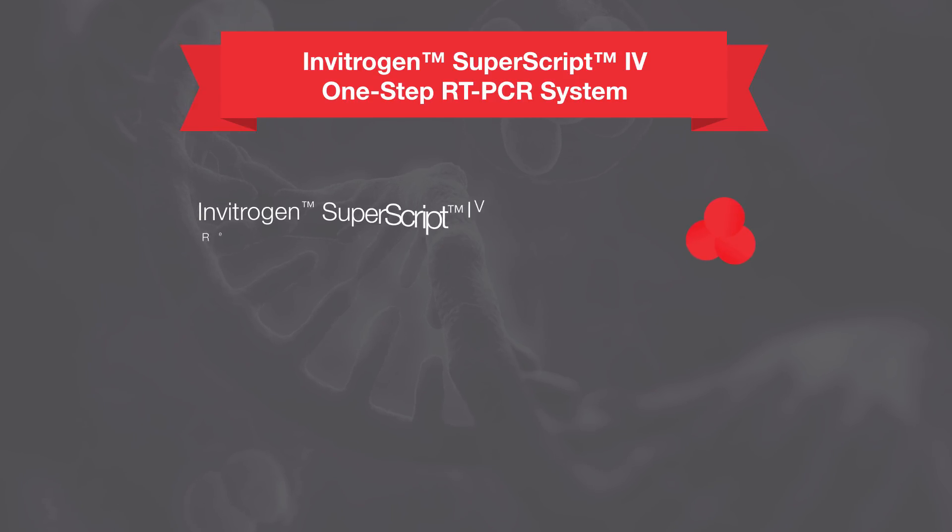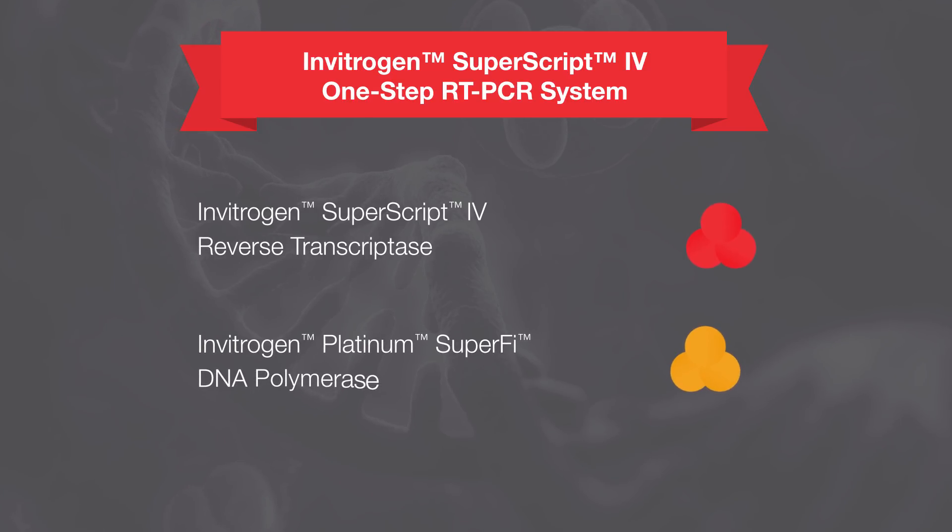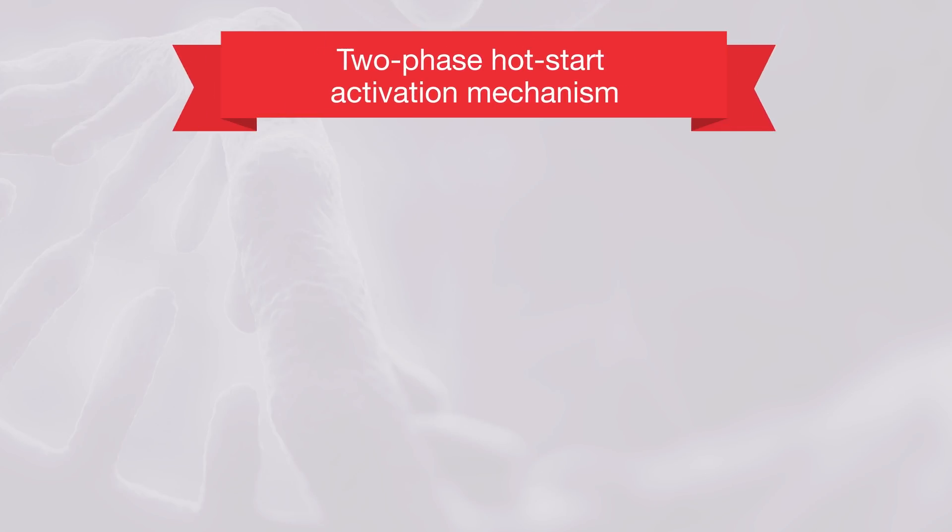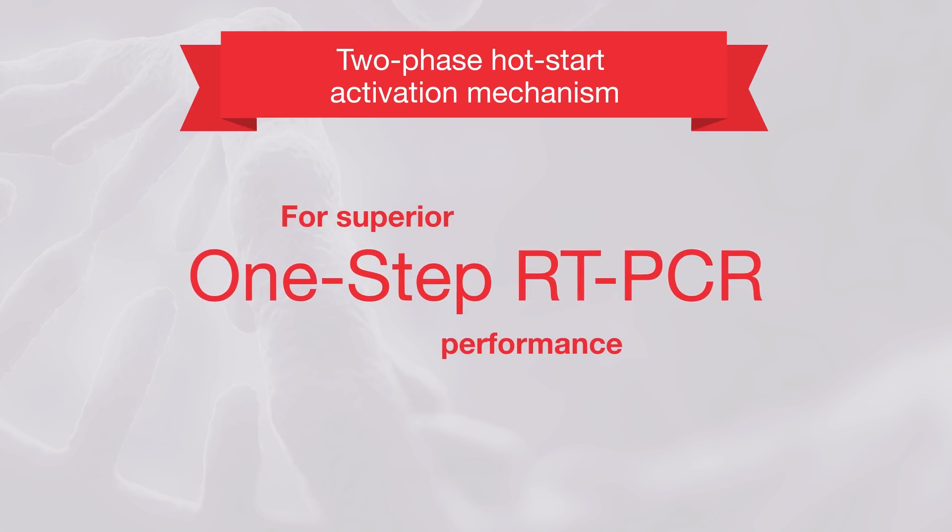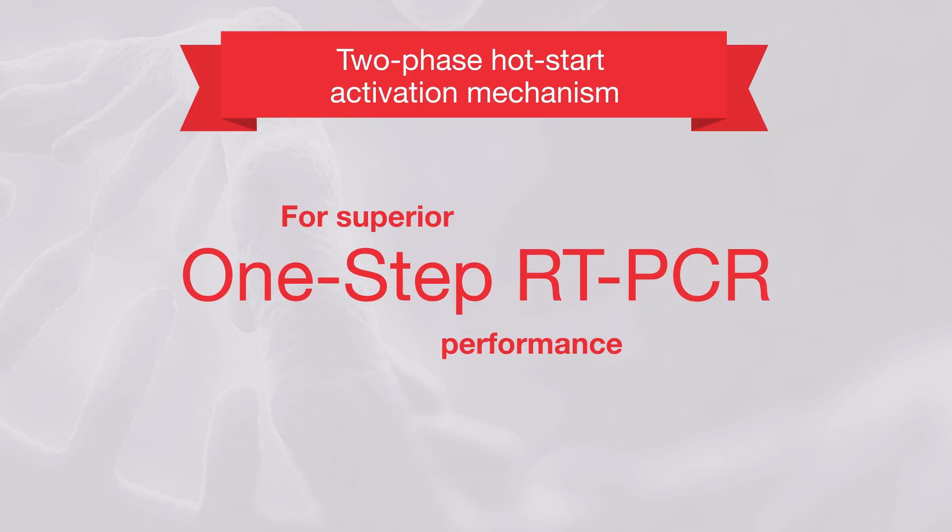The Invitrogen Superscript 4 one-step RT-PCR system combines the Superscript 4 reverse transcriptase with the high-fidelity Platinum SuperFi DNA polymerase. This system utilizes an innovative two-phase hot-start activation mechanism to help achieve superior specificity and performance in one-step RT-PCR applications.